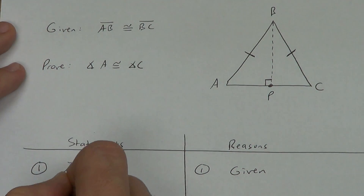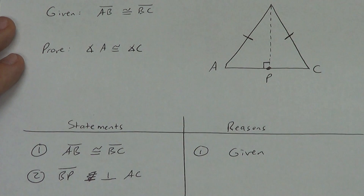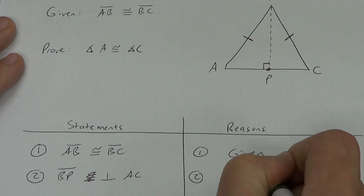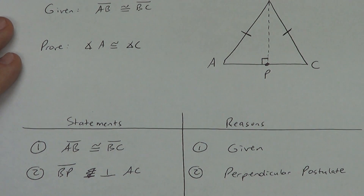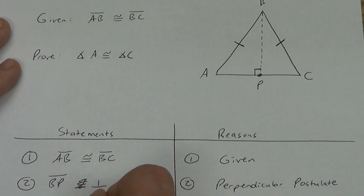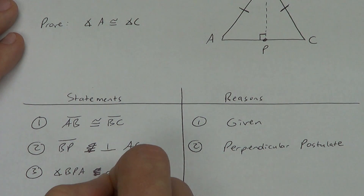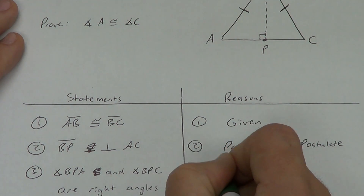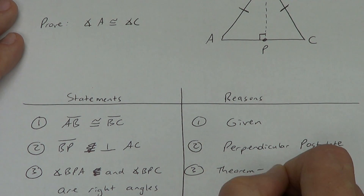BP is perpendicular to AC. Why? That was called the perpendicular postulate — it told me it has to exist. Now, what do we know about perpendicular lines? Perpendicular lines form four right angles. So angle BPA and angle BPC are right angles. That comes from the theorem that says perpendicular lines form four right angles.